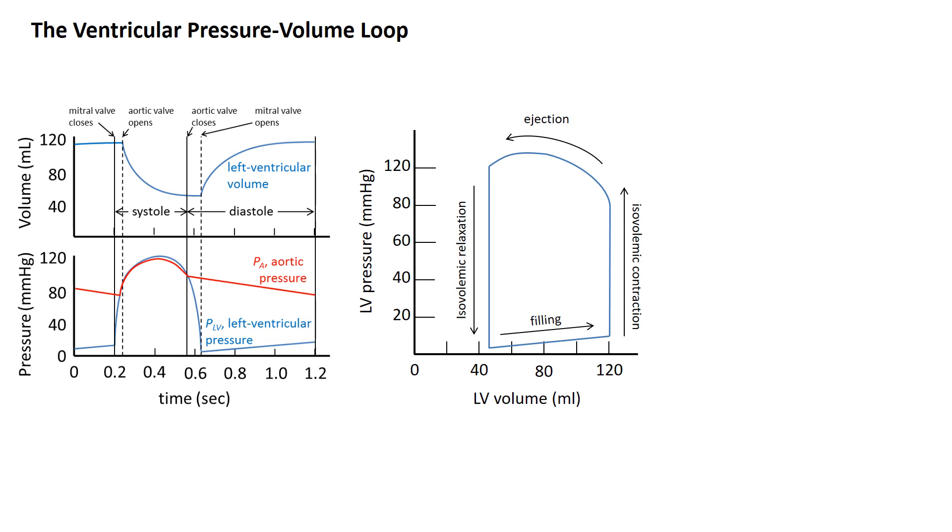Next, we want to look at a different and complementary way to visualize the cardiac cycle. On the left is what we just saw, plotting pressure and volume as functions of time. Here on the right, we're plotting pressure in the left ventricle versus volume in the left ventricle. This plot is called the ventricular pressure-volume loop. The pressure-volume loop cycle is a loop or a cycle because the heart operates cyclically via the cardiac cycle. We're plotting the same variables on the right that we're plotting on the left, just in a different way and not explicitly showing time.